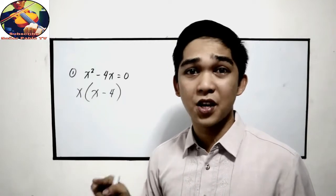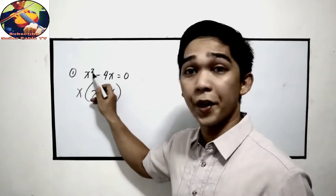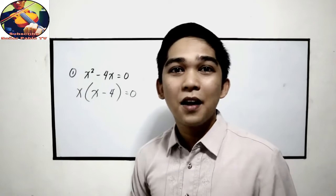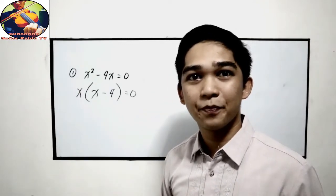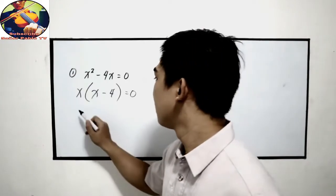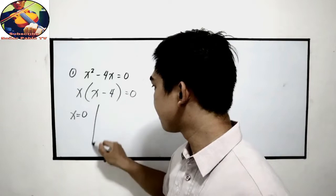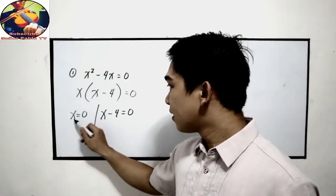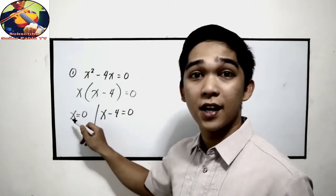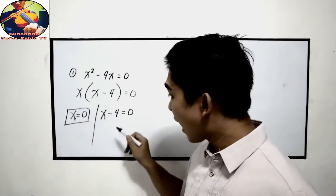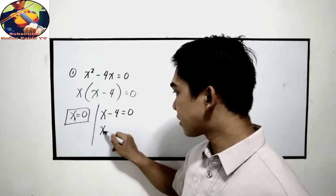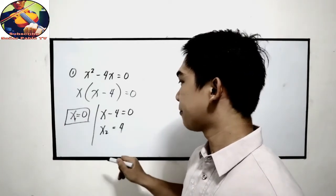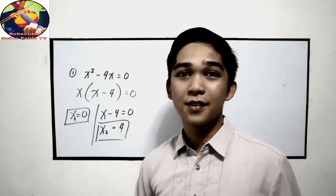You can also check whether your factors are correct: x times negative 4 gives negative 4x, equal to 0. Now we can get the value for x — equate to 0. So x is equal to 0, and the other factor is x minus 4 equals 0. x equals 0 is our first answer, x sub 1. And x sub 2: transpose negative 4, x equals positive 4.